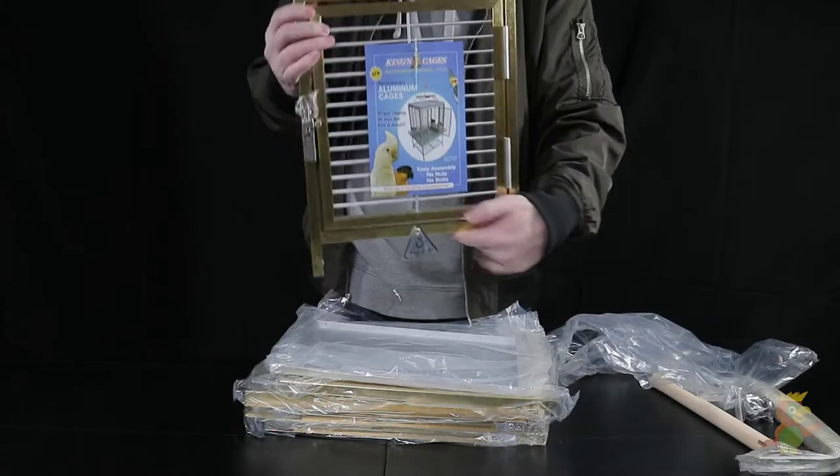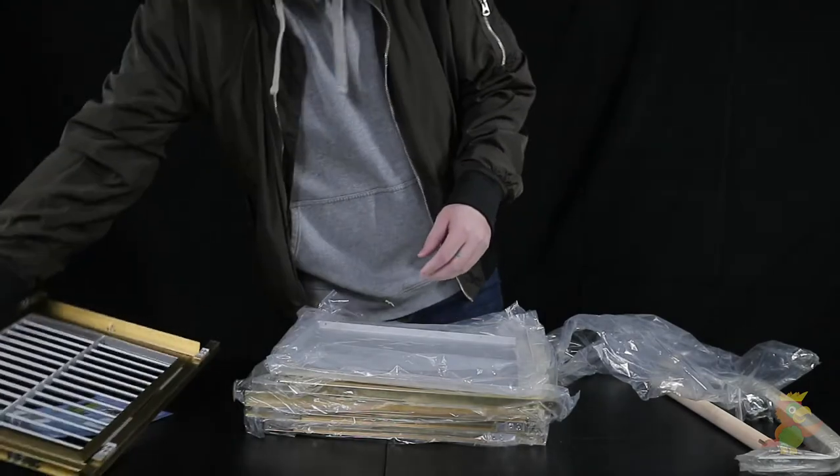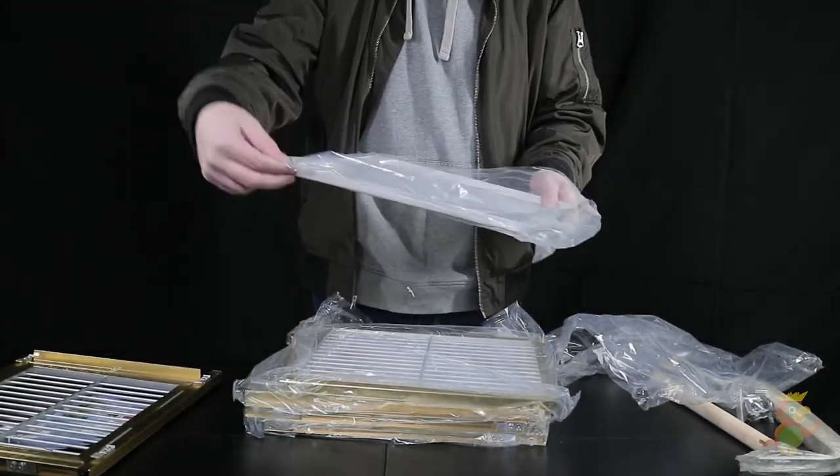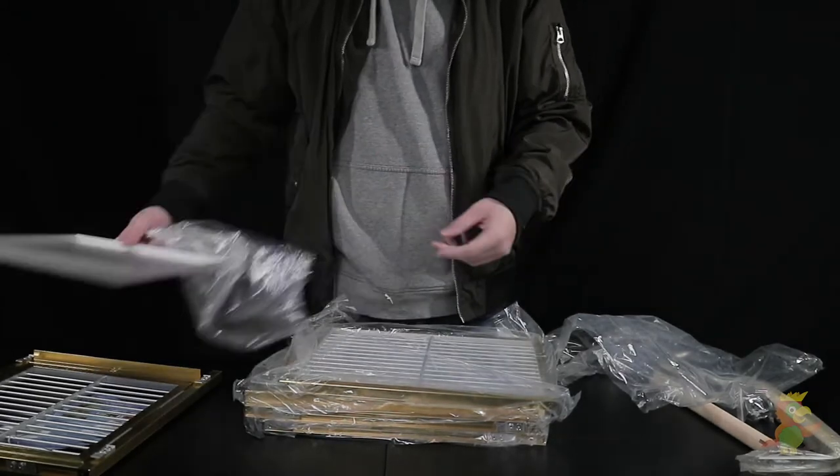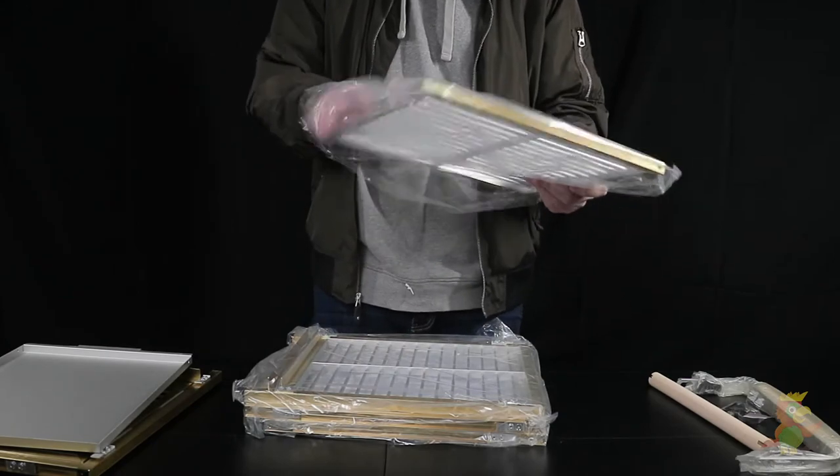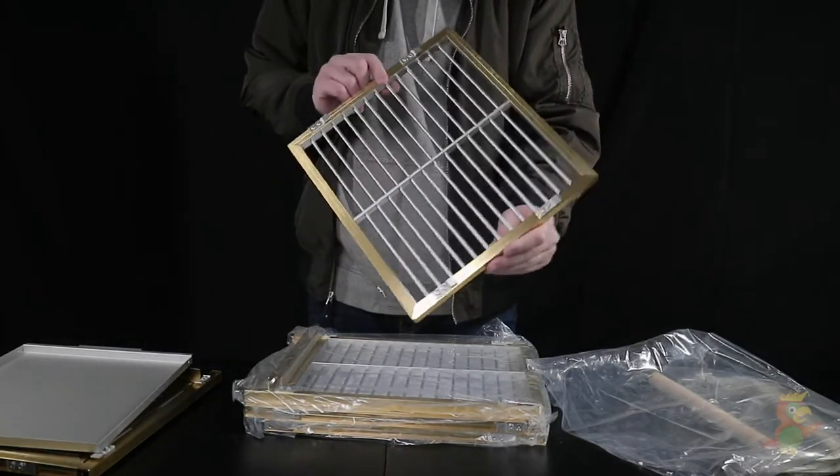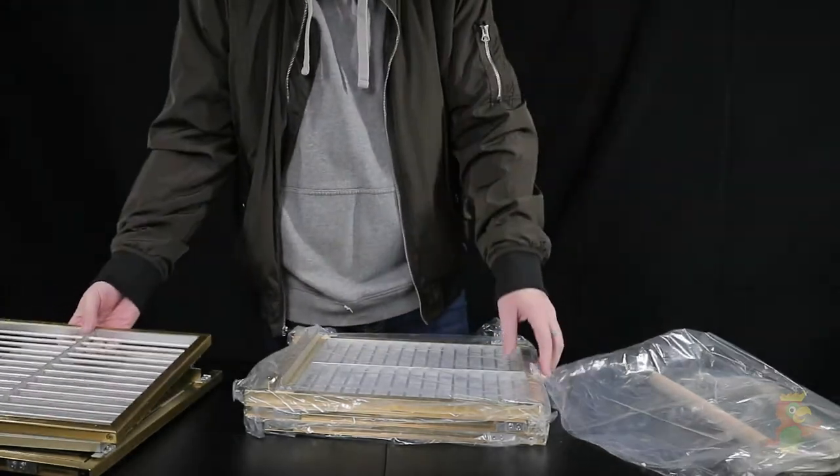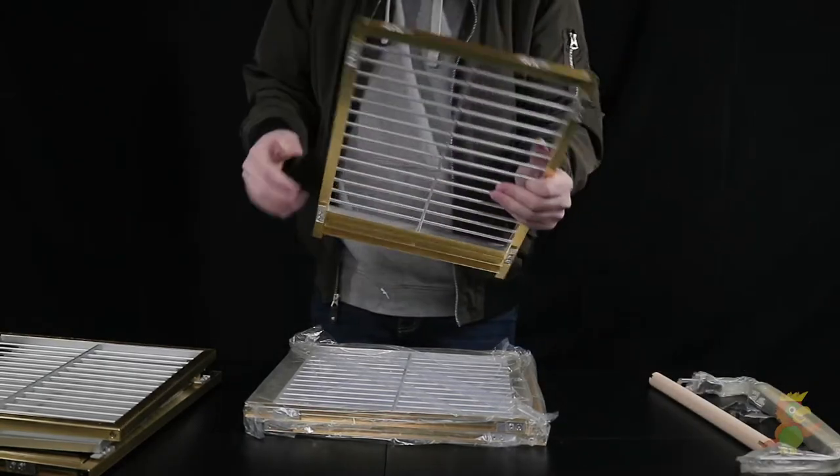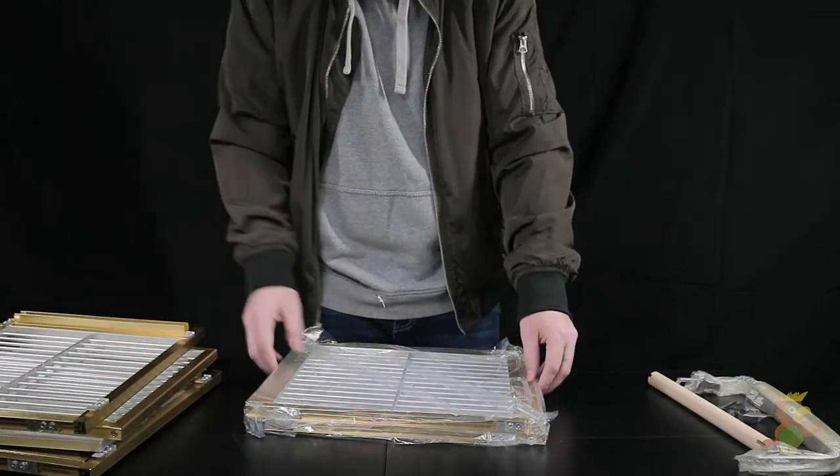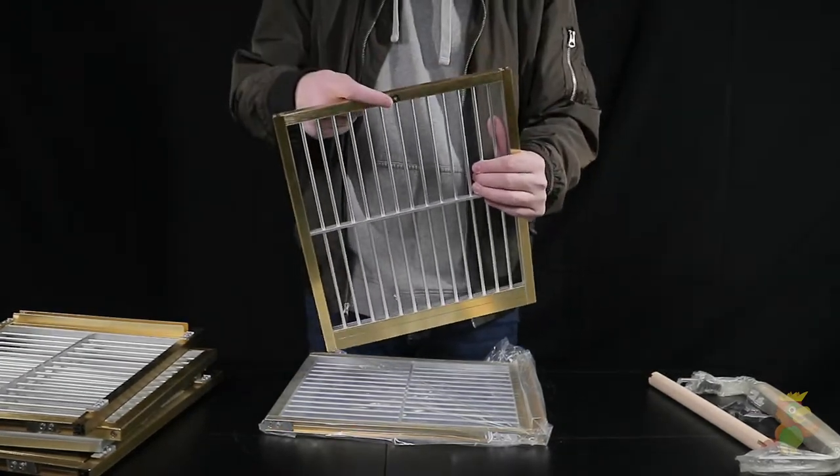The first piece we have here is the front door with our patented bird-proof spring lock. The next is the bottom tray. Here we have the top. And the back and sides with the rails to hold the tray. The side panels will have a black plastic knob to hold on the handle.